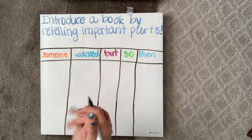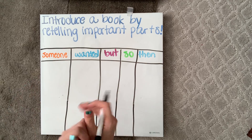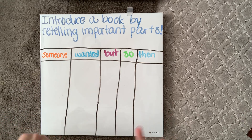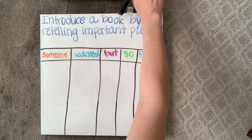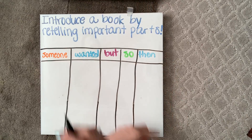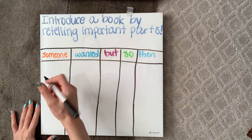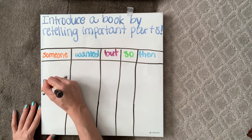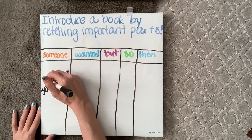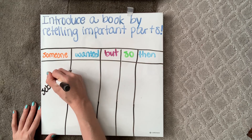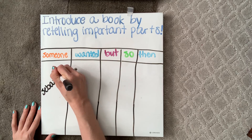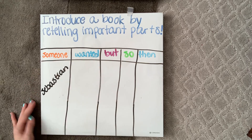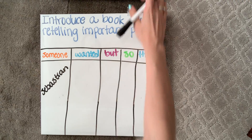So the first thing is someone. This is the main character, and sometimes it can include other important characters, but for this book, our someone is Sebastian — he's our main character. So underneath the someone column, I'm going to put Sebastian.